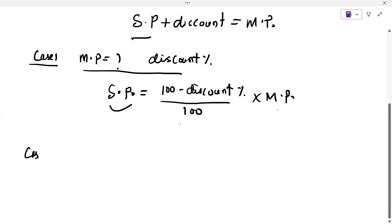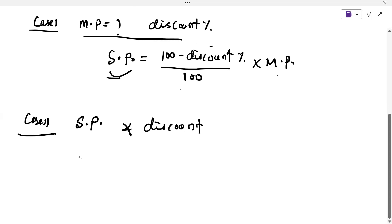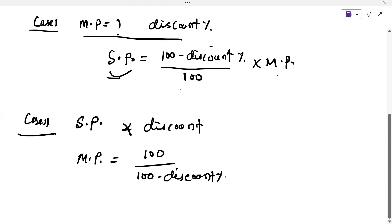Case two: if selling price (SP) and discount percentage are given and we need to find market price, then market price equals 100 divided by (100 minus discount percentage), multiplied by selling price. These two formulas are used to evaluate every problem in real-life.